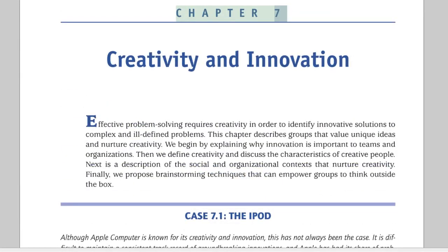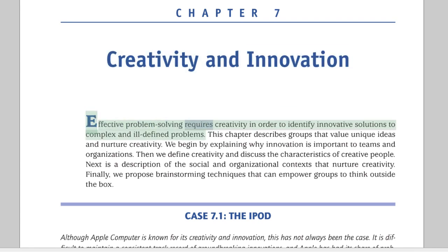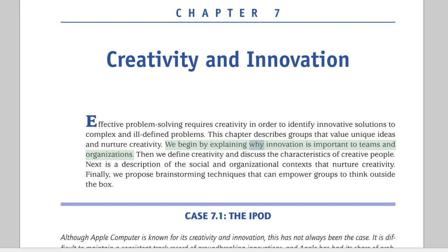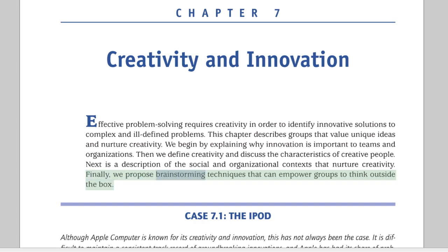Chapter 7: Creativity and Innovation. Effective problem-solving requires creativity in order to identify innovative solutions to complex and ill-defined problems. This chapter describes groups that value unique ideas and nurture creativity. We begin by explaining why innovation is important to teams and organizations, then define creativity and discuss the characteristics of creative people. Next is a description of the social and organizational contexts that nurture creativity. Finally, we propose brainstorming techniques that can empower groups to think outside the box.